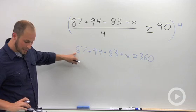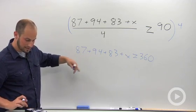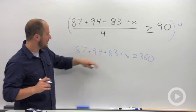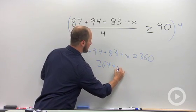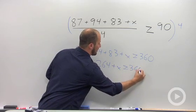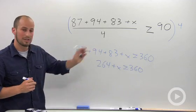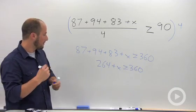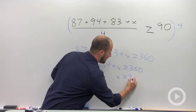terms: 87 plus 94 plus 83—some bigger numbers, I'll use my calculator. This ends up being 264 plus X, which has to be greater than or equal to 360. Subtract that 264 over. X has